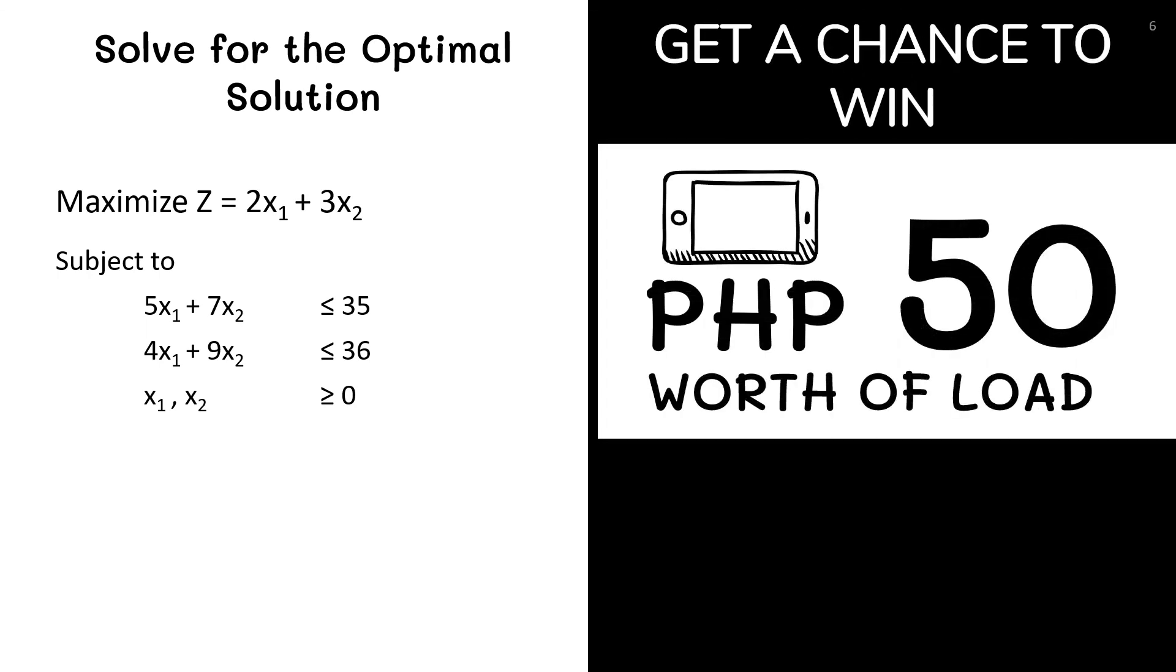subject to three constraints. First, 5x sub 1 plus 7x sub 2 less than or equal to 35. Second, 4x sub 1 plus 9x sub 2 less than or equal to 36. And the decision variables must be non-negative integers. Get a chance to win 50 pesos worth of load.